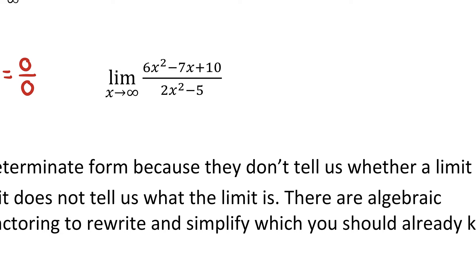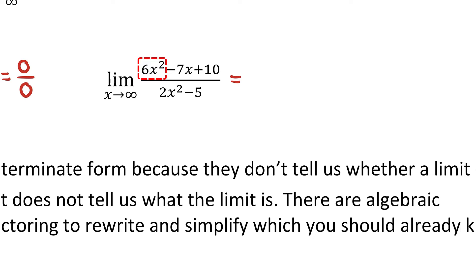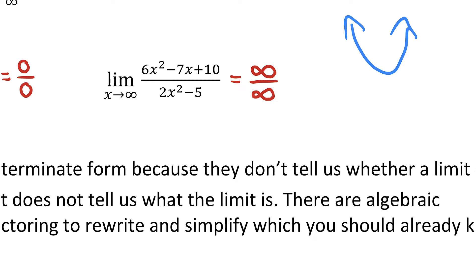The second limit is the limit as x goes to infinity of a quotient of two quadratic functions. For a limit at infinity, I look at the highest degree terms in both the numerator and denominator to see what happens as x goes to infinity. I can see that 6x squared and 2x squared both go to infinity. They're both quadratics with a positive leading coefficient, so as x goes to infinity the y values go to infinity as well. That's indeterminate form of infinity over infinity.